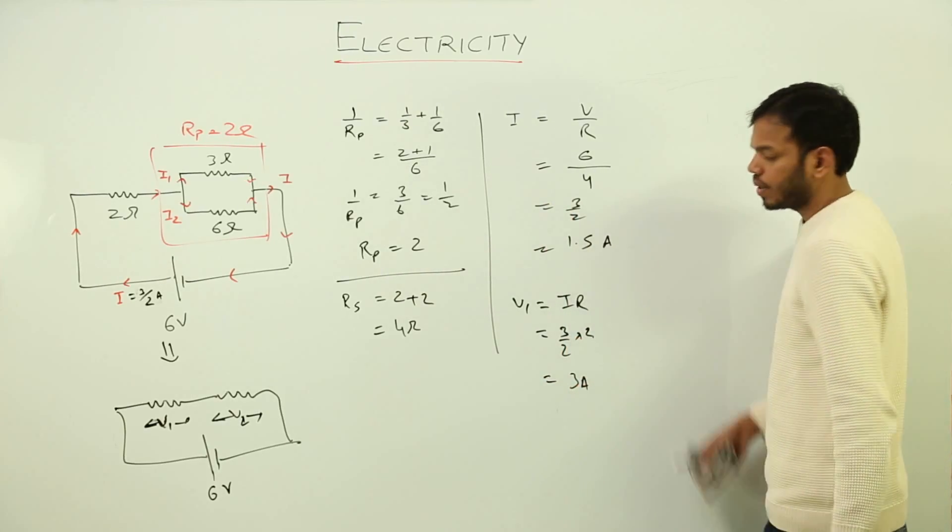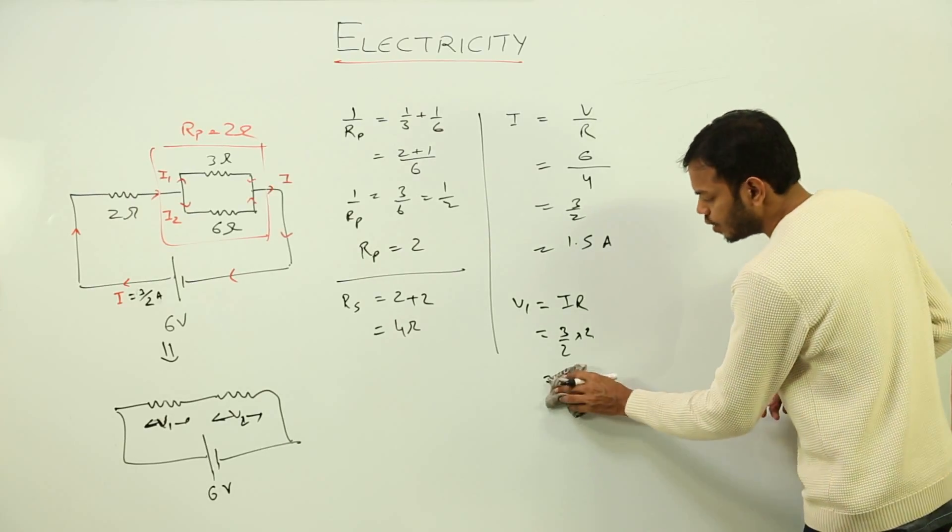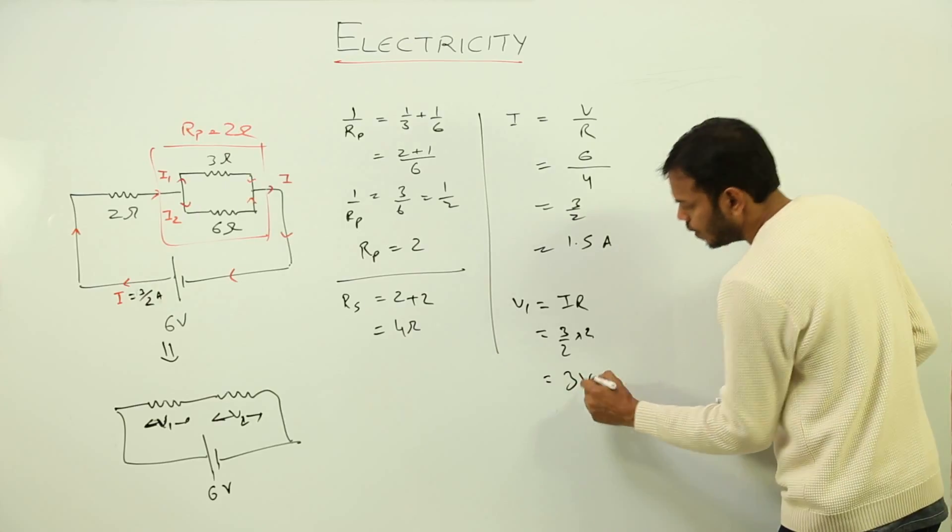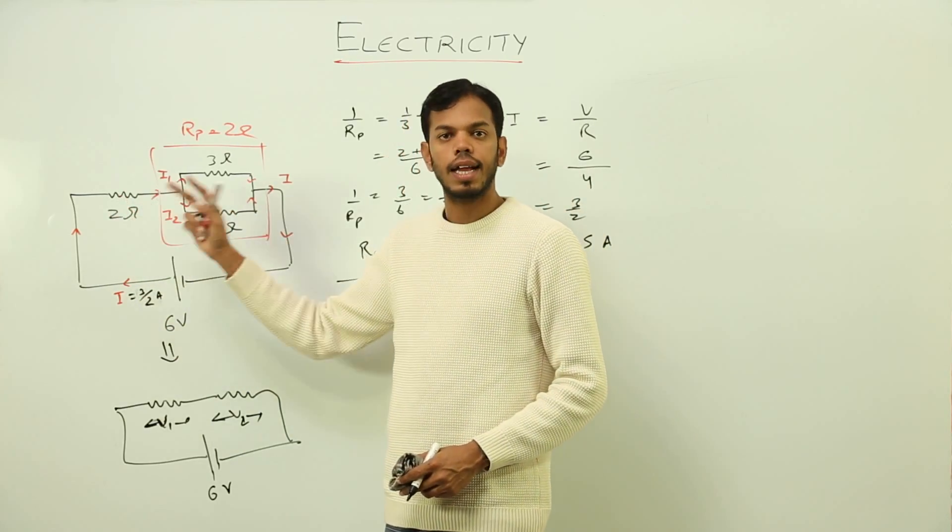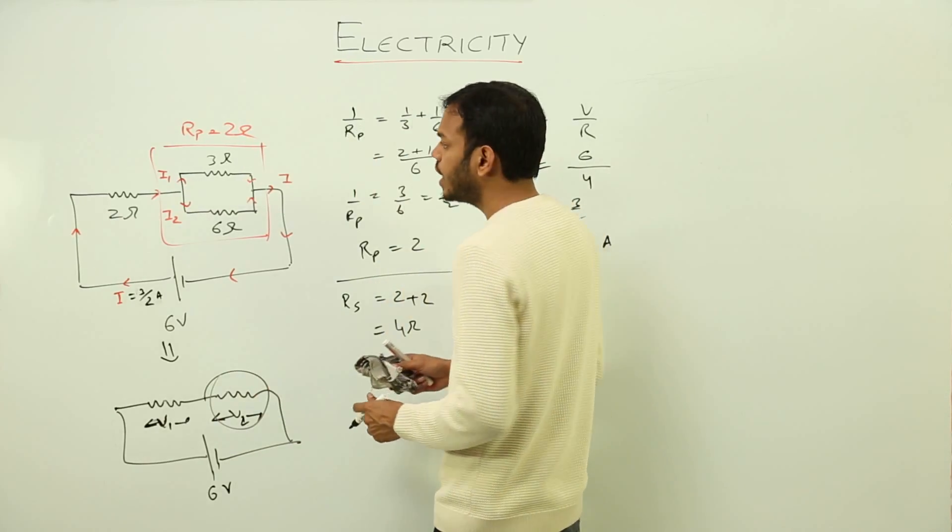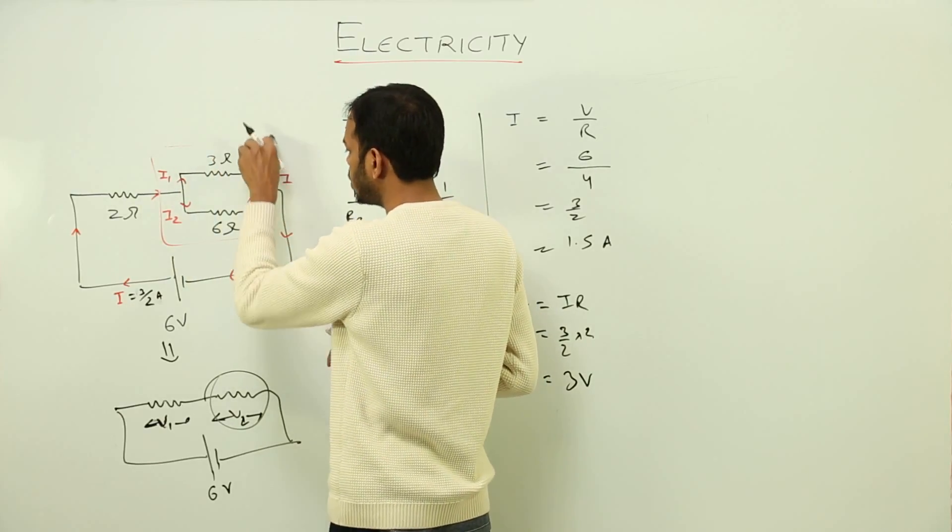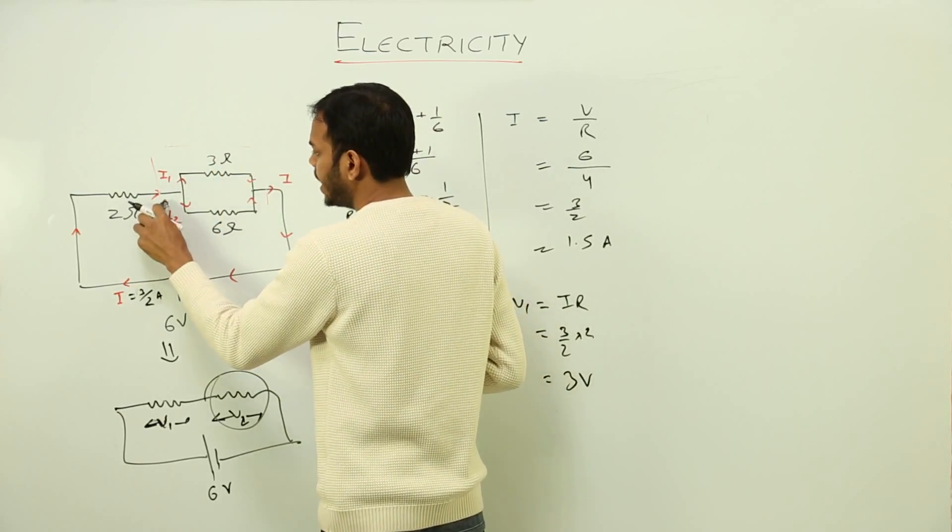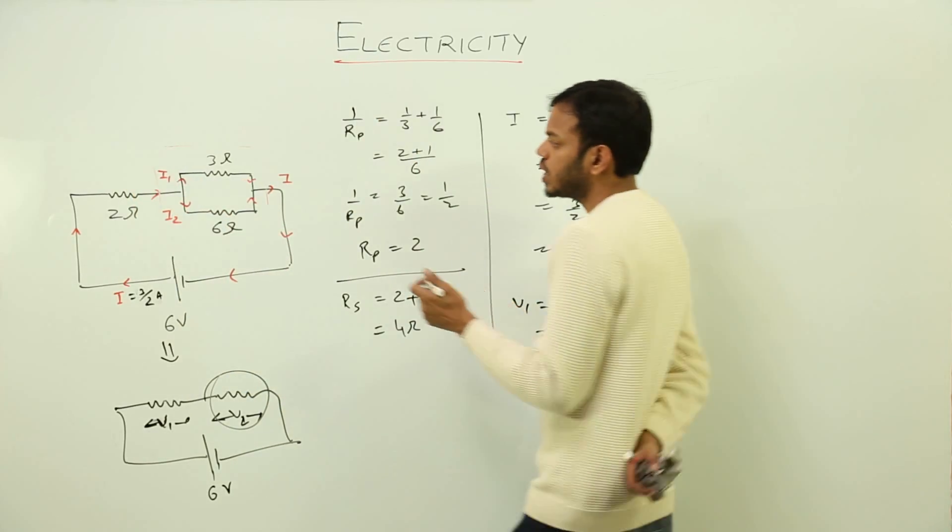So this is 3 volts. 3 volts has been utilized by this resistor. That means 3 volts will be utilized by this resistor as well, because they are in parallel combination. They have actually used 3 volts right now. So 3 volts in parallel, voltage is always equal.